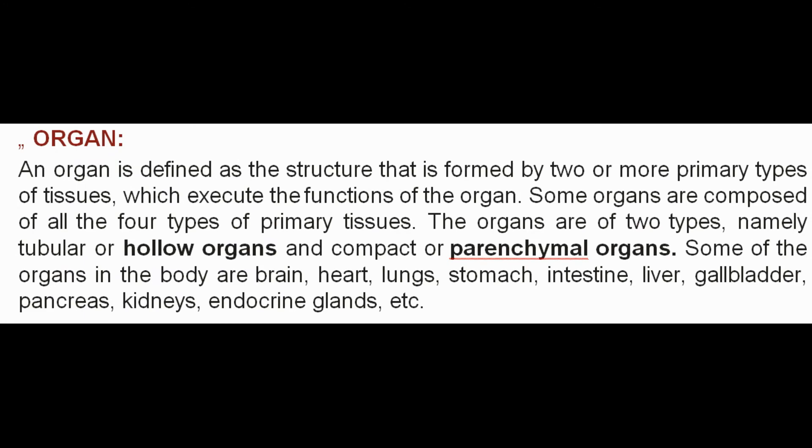An organ is defined as the structure formed by two or more primary types of tissues, which execute the functions of the organ. Some organs are composed of all four types of primary tissues. Organs are of two types: tubular or hollow organs, and compact or parenchymal organs. Some organs in the body are brain, heart, lungs, stomach, intestine, liver, gallbladder, pancreas, kidneys, and endocrine glands.